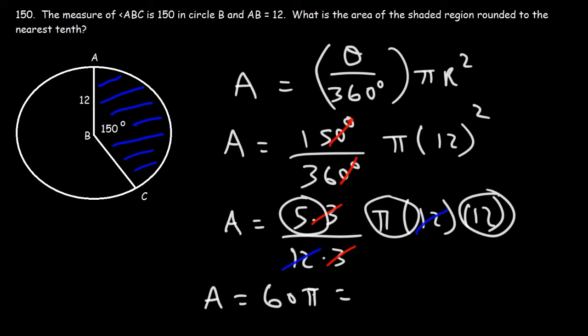Now, if you type in 60 pi into your calculator, you should get 188.495. But I'm going to round that to 0.5. So this is our rounded answer, 188.5 square units. That is the area of the shaded region.